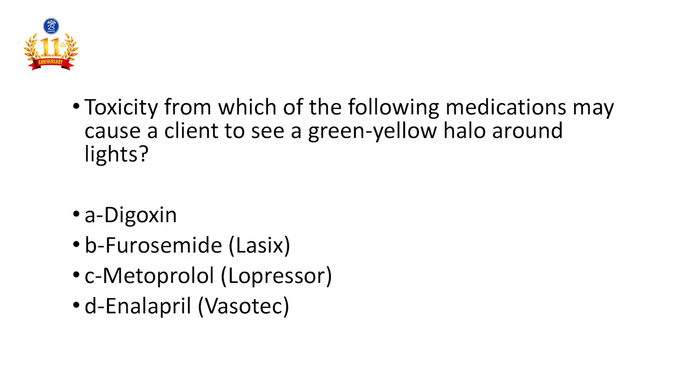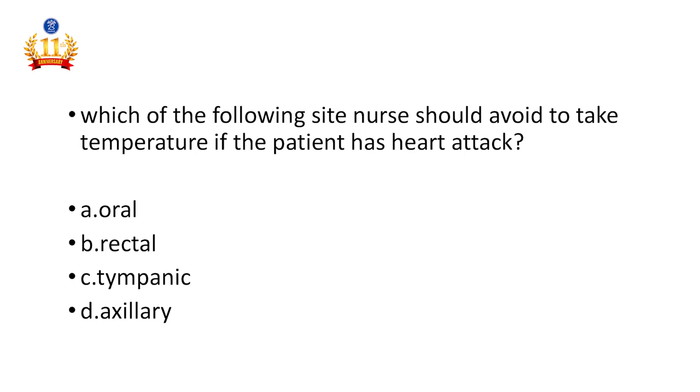Seventh question: Toxicity from which of the following medications may cause the client to see a green-yellow halo around lights? Options: digoxin, furosemide, metoprolol, or enalapril. The answer is digoxin. Digoxin toxicity causes the patient to see a green-yellow halo around objects. The antidote for digoxin toxicity is digibind. Regarding furosemide — it is a loop diuretic, and we need to check blood pressure before and after giving furosemide, as BP decrease is a side effect.